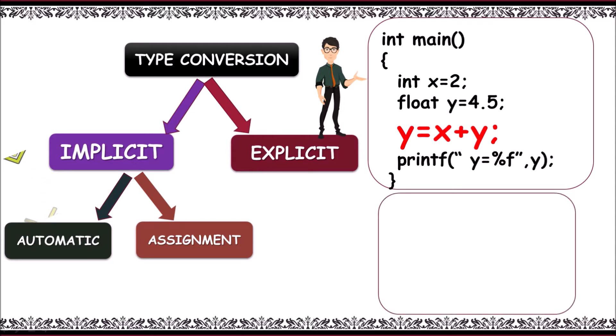Here, for expression x plus y, x from int is converted to that of float, that is, 2 to 2.00. If an expression has more than one data type, then type conversion takes place, that is, lower to higher, int to float.